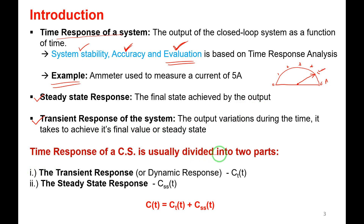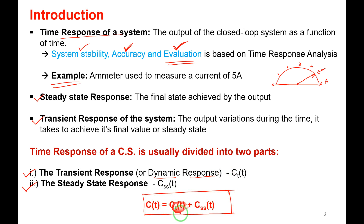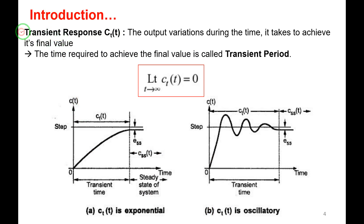The time response of the control system is divided into two parts: transient response, also called dynamic response, and steady state response. Mathematically, c(t) = ct(t) + css(t), where ct(t) is the transient response and css(t) is the steady state response. The transient response is defined mathematically as: limit as t tends to infinity of ct(t) equals 0 — meaning it vanishes at time t equal to infinity.